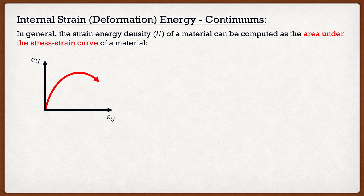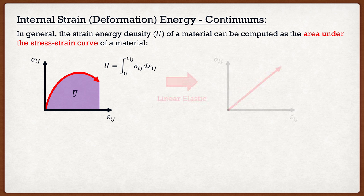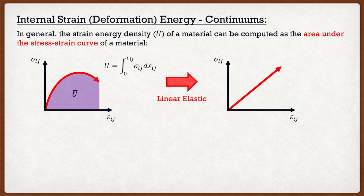The strain energy density is going to be the area under that curve. In the most general sense, all I need to do is integrate our stress function over the strains. In this course, we are dealing with linear elastic materials. Therefore, they have a nice stress-strain relationship, and the strain energy density — being the area under the curve — is simply just a triangle. Therefore, our u-bar can be calculated as one half of σ_ij multiplied by ε_ij.